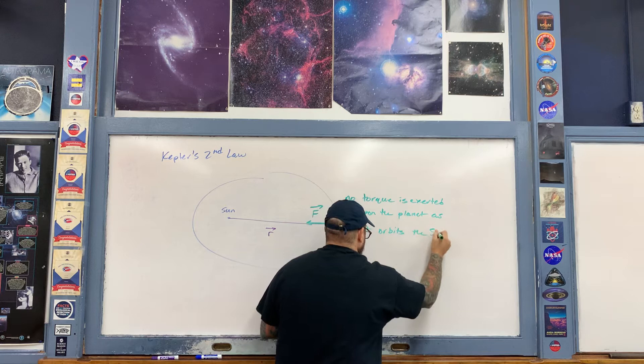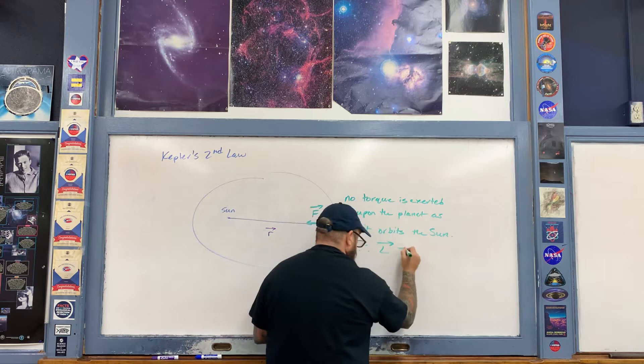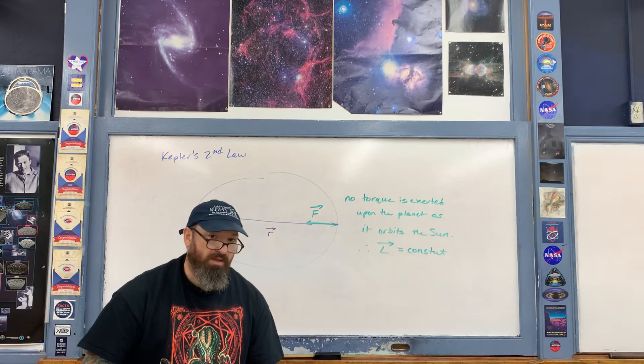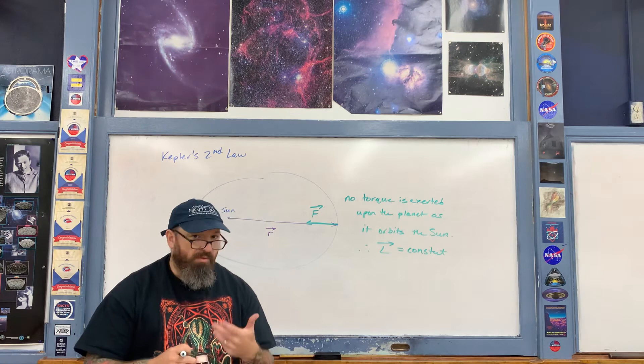Therefore, the angular momentum of the planet as it orbits the sun is equal to a constant — it is a conserved quantity. So the angular momentum L is constant. How do we then arrive at a statement of the law of equal areas from this?